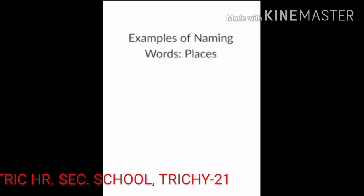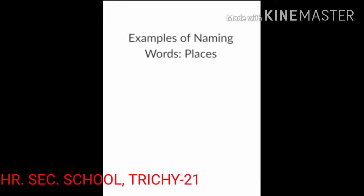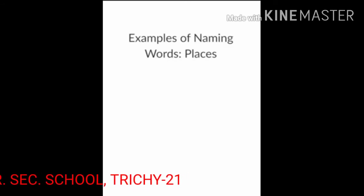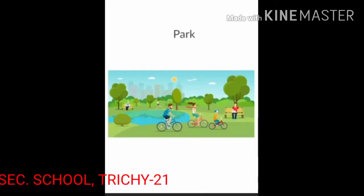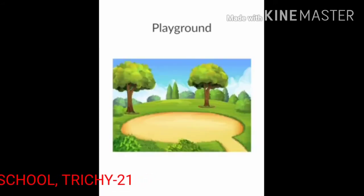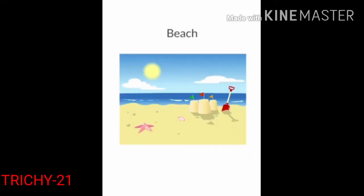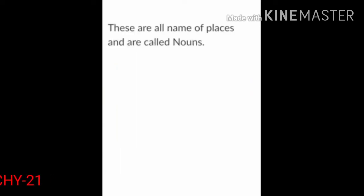Example of naming words — places. Park: P-A-R-K. Playground: P-L-A-Y-G-R-O-U-N-D. Beach: B-E-A-C-H. These are all names of a place and are called nouns.